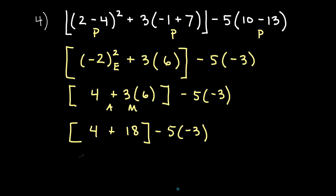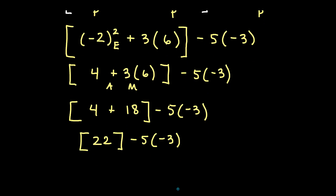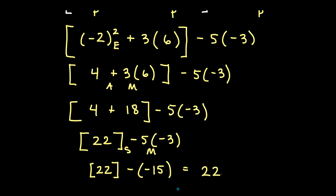Outside the brackets we have minus five times negative three. Now all parentheses are taken care of. We have a subtract and a multiply, so we do the multiply first. Five times negative three gives negative 15. So we have 22 minus negative 15. Minus a negative is the same as plus, so 22 plus 15 gives us a final answer of 37.